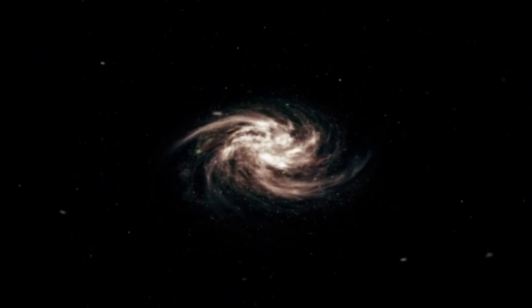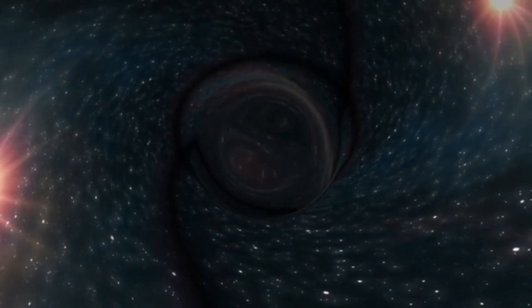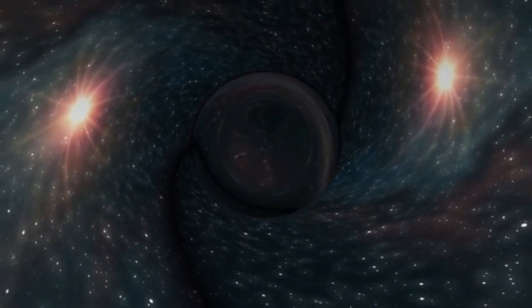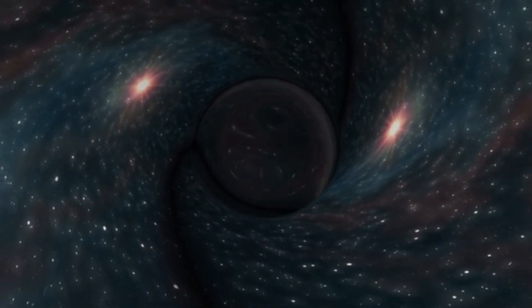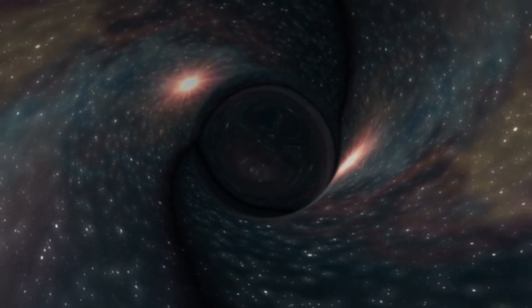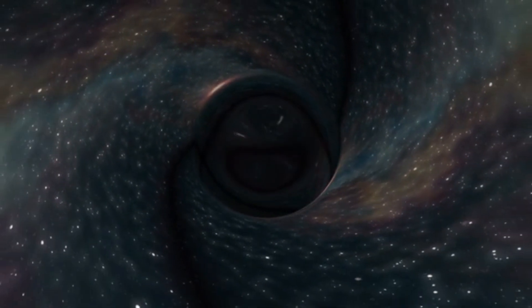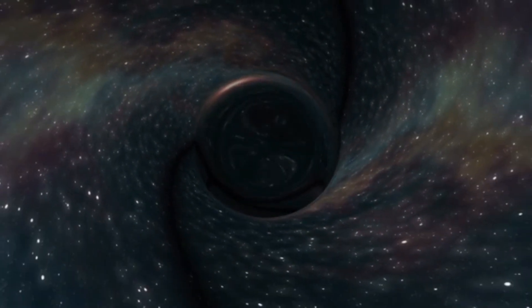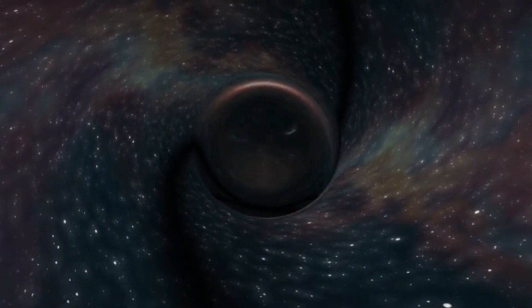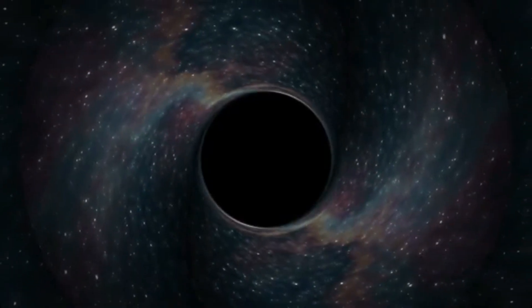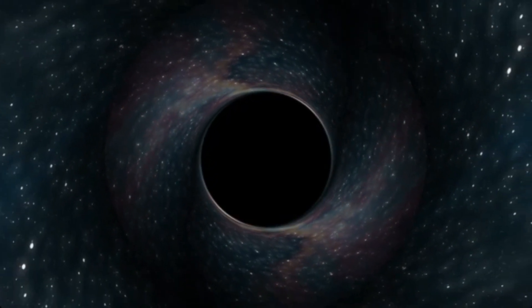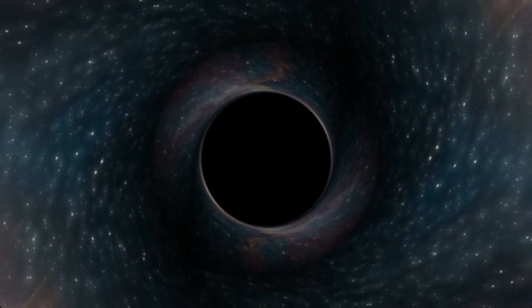Additionally, the first stars that exploded as supernovae might have collapsed further to form black holes. The black holes started to swallow gas and other stars to become objects known as mini-quasars, which grew and merged to become the huge black holes now found at the centers of nearly all massive galaxies.